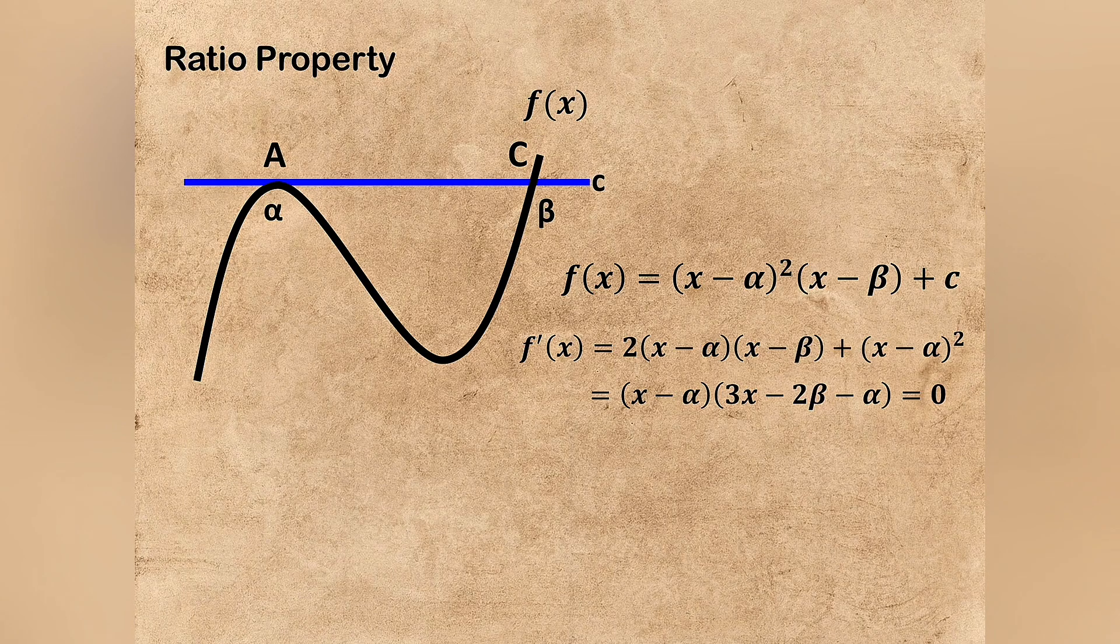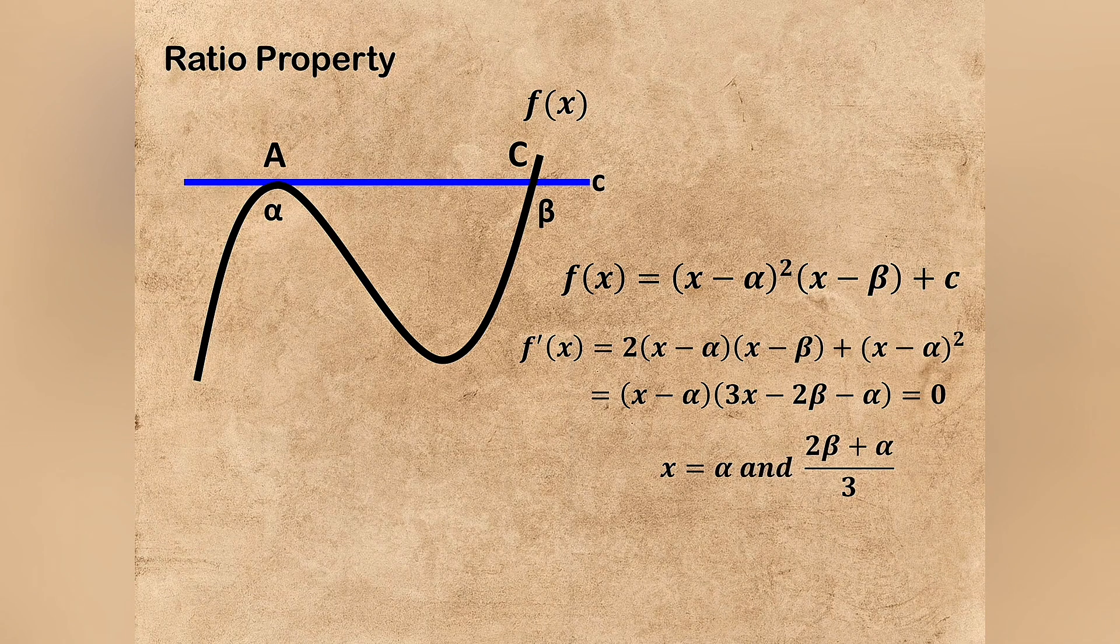And if you set this as equal to 0, then we can say the roots are α and (2β+α)/3.